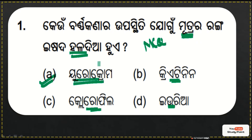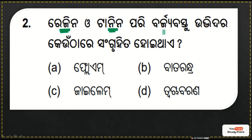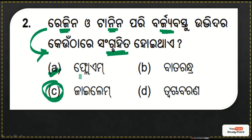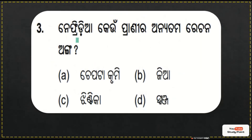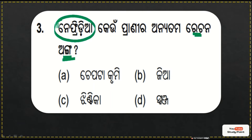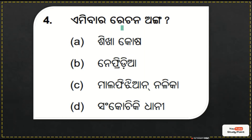The options include phloem and xylem, and the right answer is option C — xylem. Next, question number 3: nephron is one of the options, and the right answer is G.